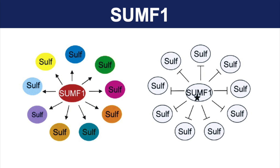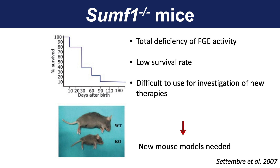There has been an animal model of multiple sulfatase deficiency generated several years ago, which is completely lacking enzyme activity of FGE, the enzyme encoded by SUMF1. These mice, however, are very difficult to use because they start dying shortly after birth. They are much smaller, as you can see from the slide, and they are very challenging to use for investigation of new therapies and for better understanding of the disease mechanism.